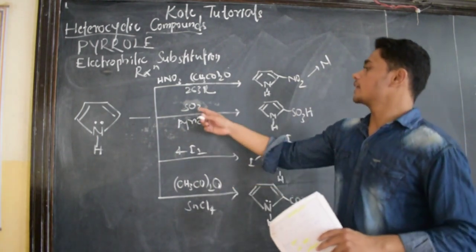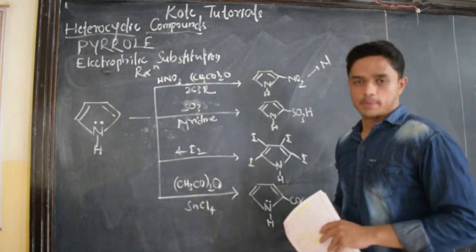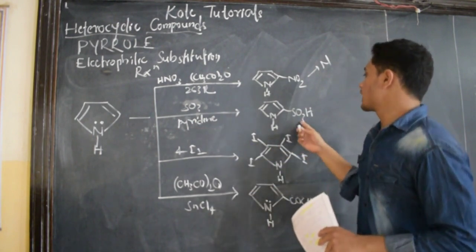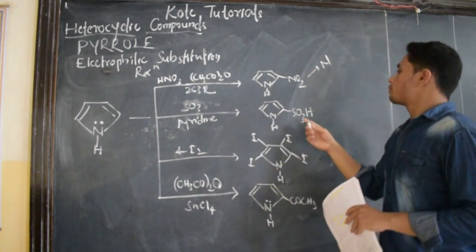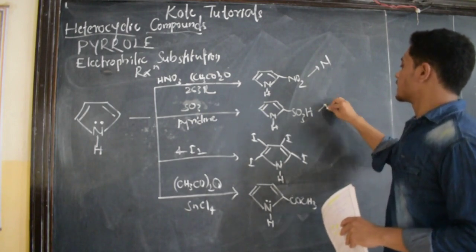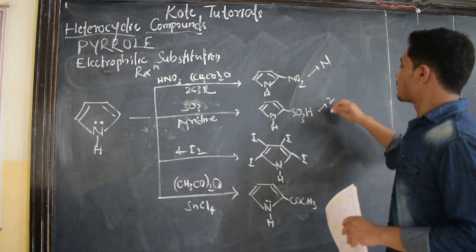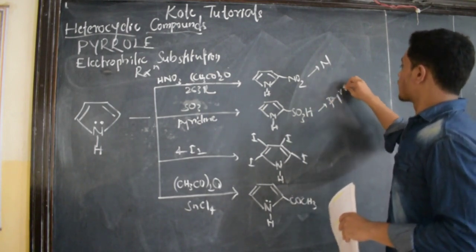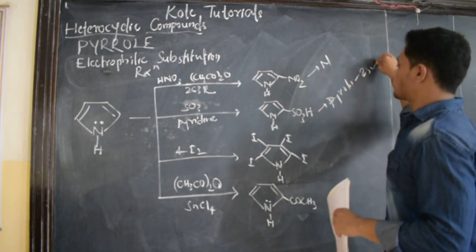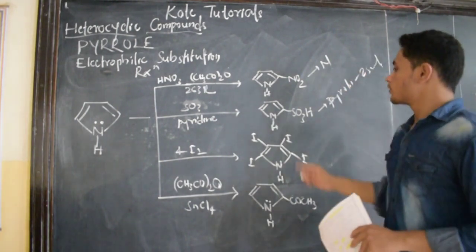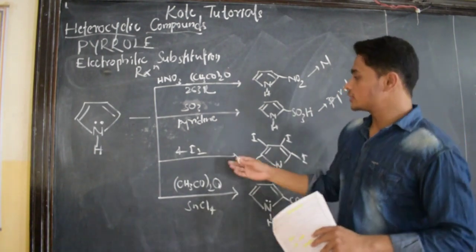The same pyrrole when reacted with SO3 in presence of pyridine, we are going to get 2-pyrrole-sulfonic acid, that is pyrrole-2-sulfonic acid group.